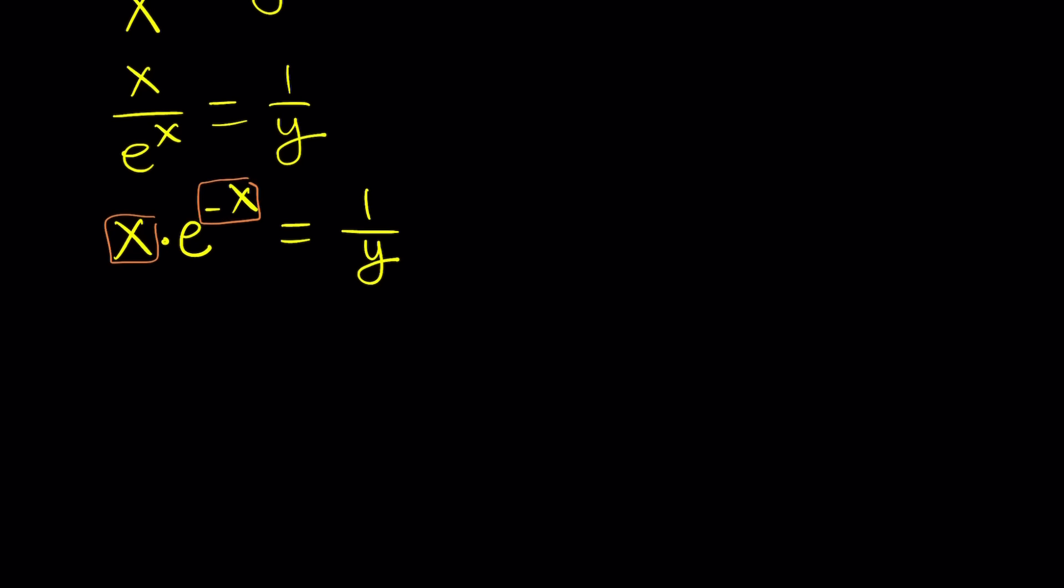So how do you make it possible? Multiply both sides by negative one. Easy. So if you multiply both sides by negative one, you get negative x times e to the power negative x equals negative one over y. Great.